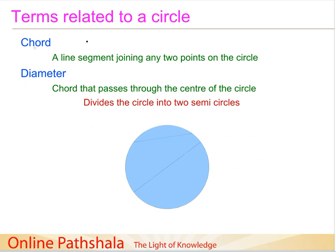Now we have something called a chord. A chord is a line segment which joins any two points on the circle. For example, if we take point A and point B on the circumference of the circle, this line segment is called chord AB. There can be many other chords on the circle as well.